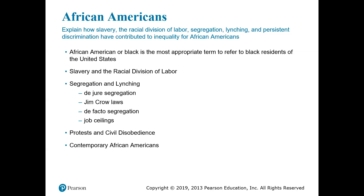After slavery was abolished in 1863, this division of labor was maintained. De jure segregation, also known as Jim Crow laws, was the passage of laws that systematically enforced the physical and social separation of African Americans from whites in all areas of public life, including schools, churches, hospitals, cemeteries, buses, restaurants, water fountains, and restrooms. African Americans who did not stay in their place were subjected to violence by secret organizations such as the Ku Klux Klan and by lynch mobs. While African Americans in the South experienced de jure segregation, those who migrated to the North experienced de facto segregation — racial separation and inequality enforced by customs, including job ceilings. Because African American men were barred from many industrial jobs, African American women frequently became their families' primary breadwinners.